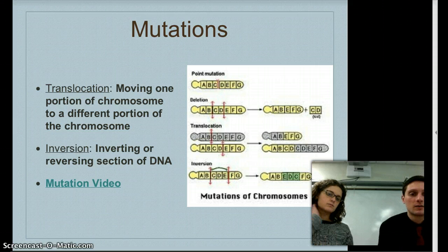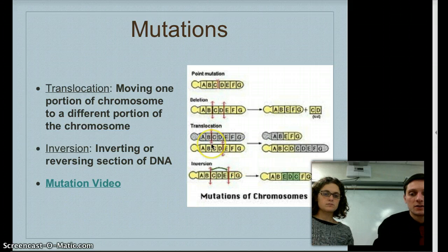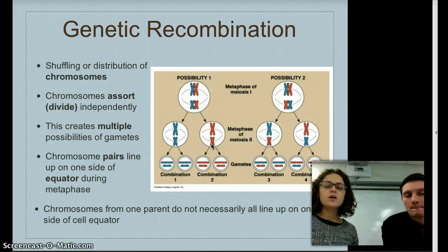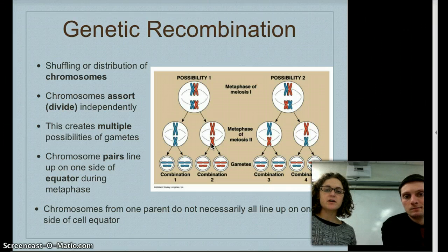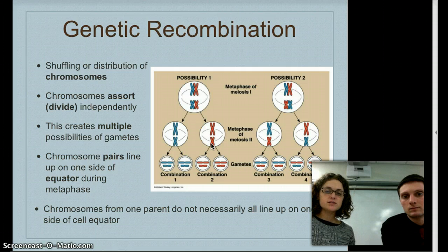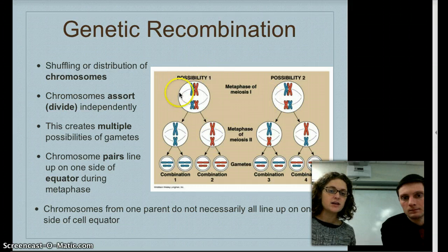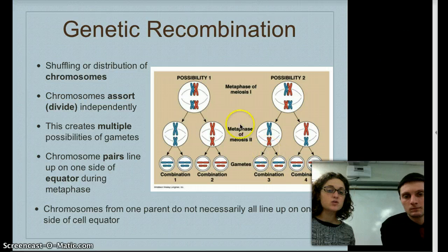This also touches on translocation and inversion, a couple of other types of mutations. The final way we're going to talk about increasing genetic diversity is the shuffling or distribution of chromosomes. Your notes are in black and white, so you might want to get out two colors to follow along, because here you can see the homologous chromosomes and how they can be sorted out in different ways each time meiosis occurs.